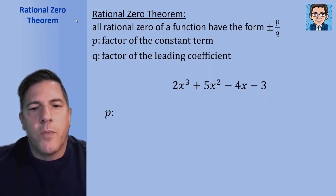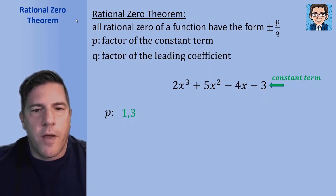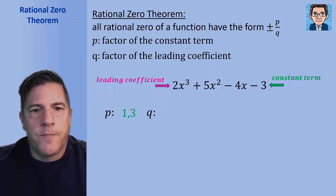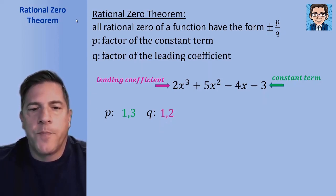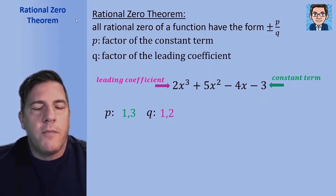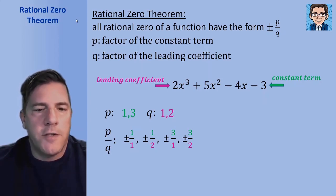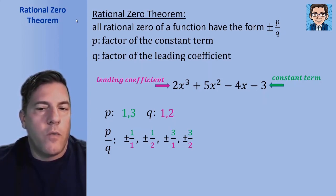First, let's figure out what p is — p is the factor of the constant term. The constant term is 3, and the only way we can get 3 is 1 times 3, so the factors of p are 1 and 3. For q, we look at the leading coefficient, which in this case is 2. The factors of 2 are 1 and 2. Then we take all the possibilities of p over q: 1 over 1, 1 over 2, 3 over 1, or 3 over 2. And then we make them plus or minus.